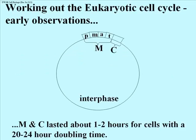Here are some very early observations in working out the eukaryotic cell cycle. You see a circle representing, from any one point to another, the generation of new cells. The top part is mitosis and cytokinesis, sometimes referred to as the M and C phases. You may recall the phases of mitosis: prophase (P), metaphase (M), anaphase (A), and telophase (T) in the illustration here. That's a very short time in the life of a cell.